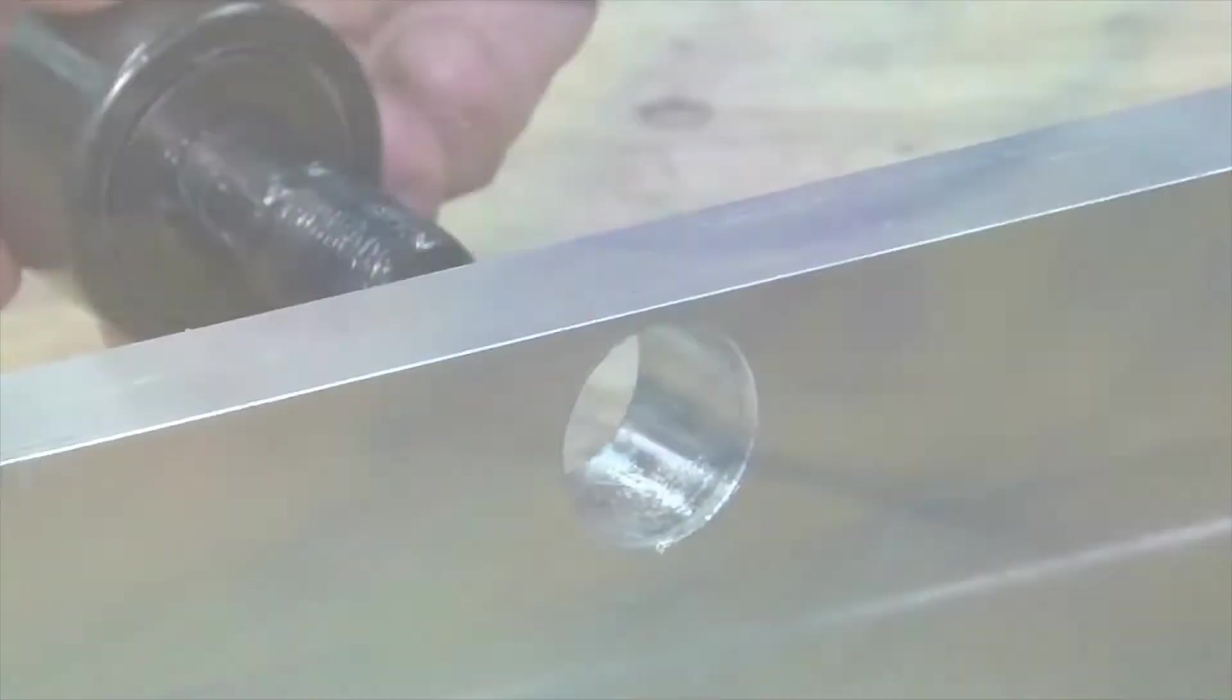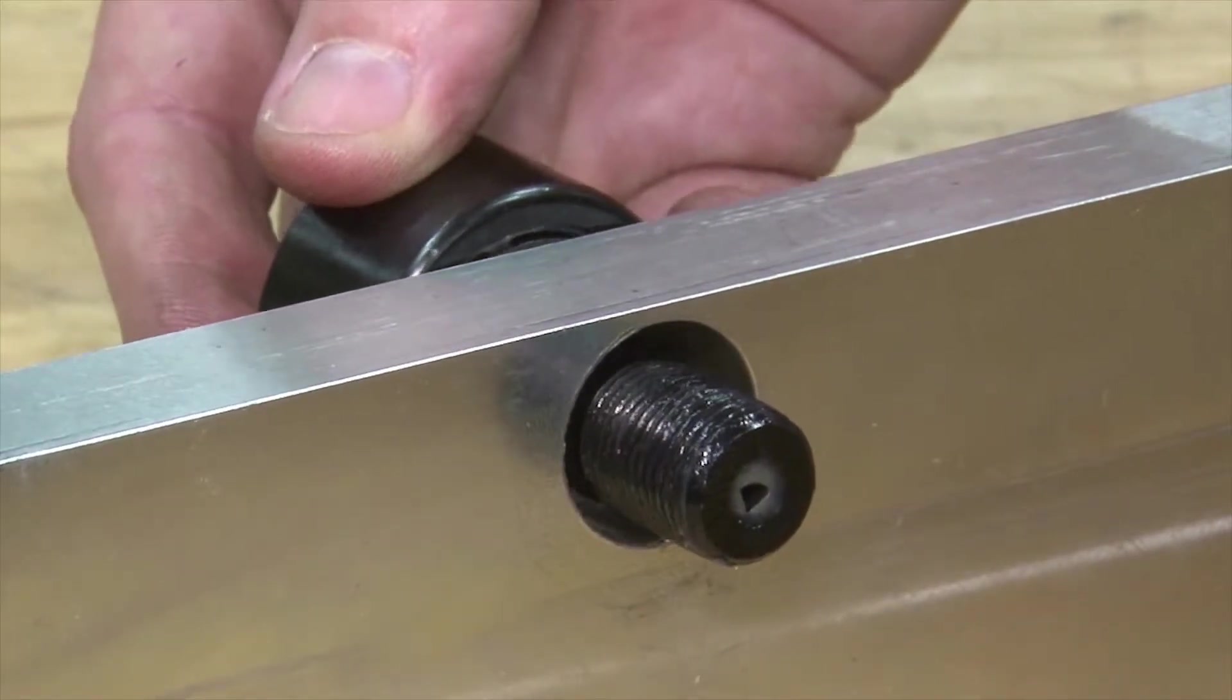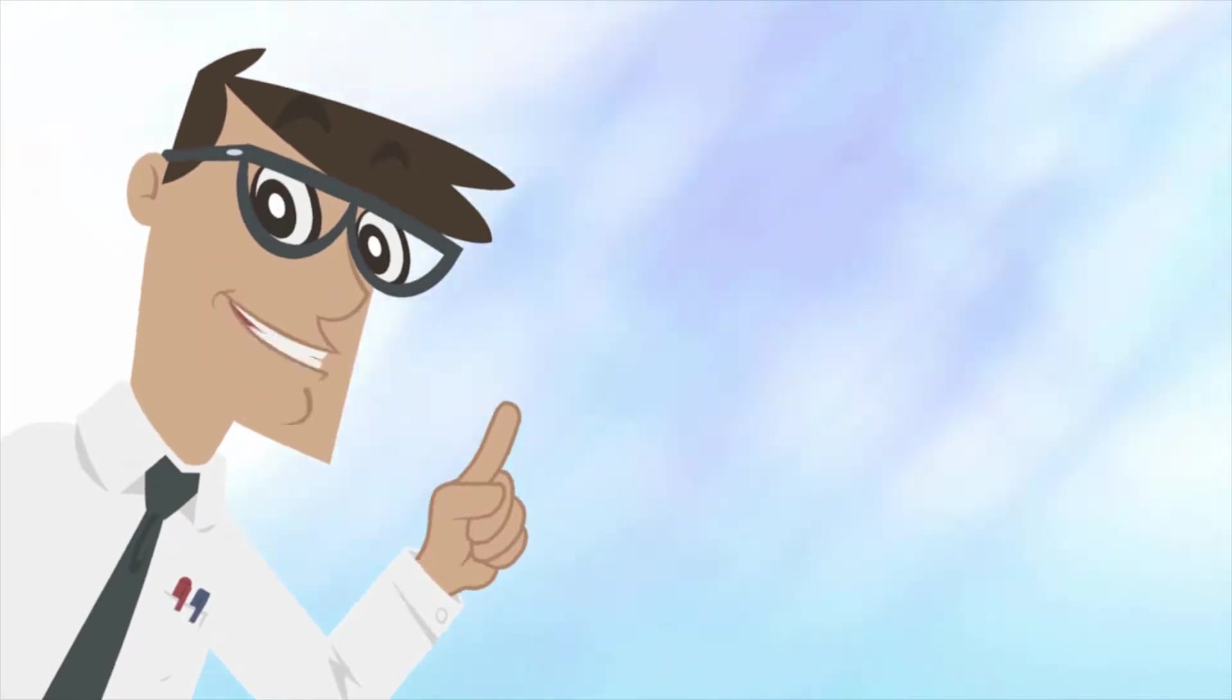A loose housing fit can allow the stud to move within the housing during operation. This movement can create wear and damage to the stud and reduce the bearing's operating life. No sir, that is not a good thing.